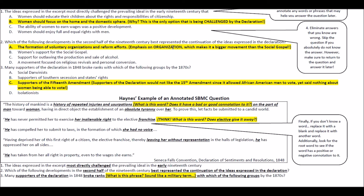For question three, I underlined 'supporters of the Declaration' and 'broke ranks' — which sounds like a military term — 'with which of the following groups by the 1870s.' You need to know a bit more here, but it's still related to the stimulus question to jog your memory. The answer is C — supporters of the 15th Amendment. Supporters of the Declaration would not like the 15th Amendment since it allowed African American men to vote yet said nothing about women being able to vote.